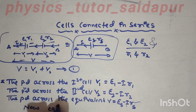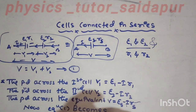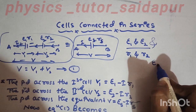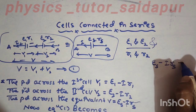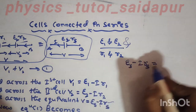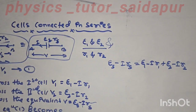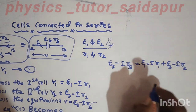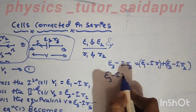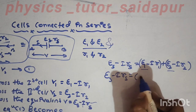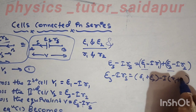Equation 1 now becomes: V equals E1 minus I times R1 plus E2 minus I times R2, which simplifies to V equals (E1 plus E2) minus I times (R1 plus R2).